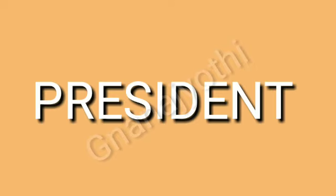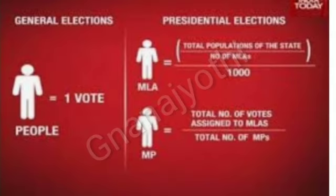Now let us learn information about the president. Article 52 of our constitution has created the post of the president. The Indian president is the constitutional head of the country. He is the first citizen, the head of the executive, and also the commander-in-chief of all three armed forces: army, navy, and air force. He enjoys the highest position in the country as the custodian of all executive powers. No court of law can question his conduct or prosecute him. Article 54 and 55 of the constitution stipulate the way the president should be elected. The president is elected by an electoral college of elected members of both houses of Parliament and all elected members of the legislative assemblies of all the states.